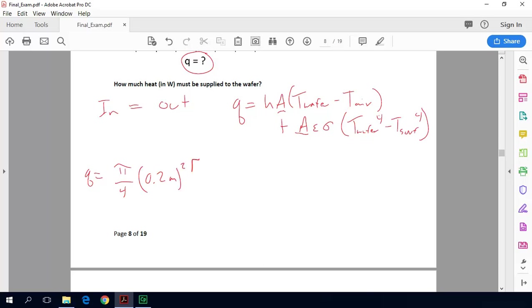Then we multiply that by the convective terms, so we've got our 30 watts per meter squared per Kelvin, multiplied by this temperature difference. So the wafer temperature is 373, and I've converted everything to Kelvin, just because the radiative terms have to be in Kelvin, minus 293 Kelvin.